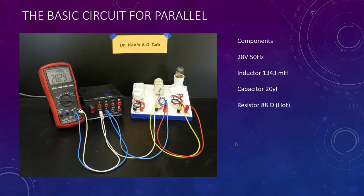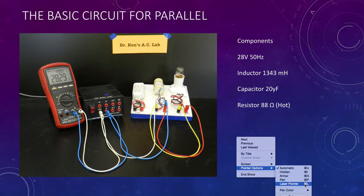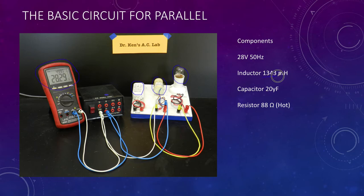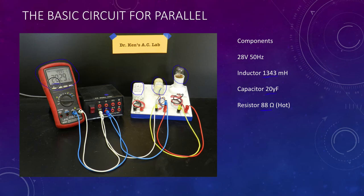Here's our basic setup. We have a voltmeter permanently connected in parallel across the supply. Then we have an inductor, a capacitor, and a lamp as a resistor. Our inductor is 1343 millihenries, our capacitor is 20 microfarads, and our resistor when operating hot is about 88 ohms. Our supply voltage is plugged into 24V and we're getting somewhere between 26 and 28 volts depending on mains supply, at 50 hertz.